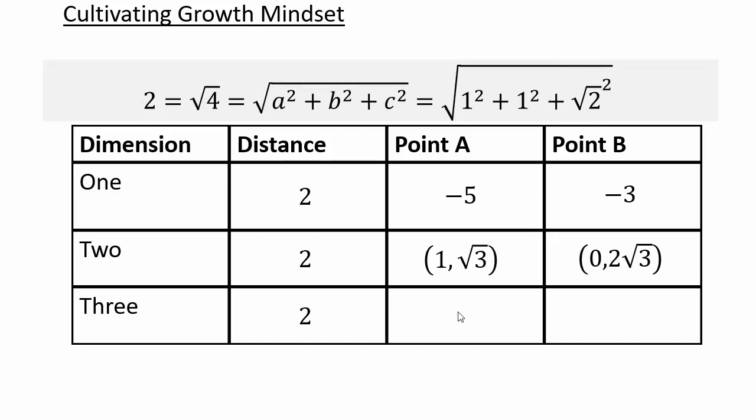And for three-dimensional, same thing. You just have to find a split for four into three different squares added together. So go ahead and you create other points and see how easy it is to come up with points whose distance is two.